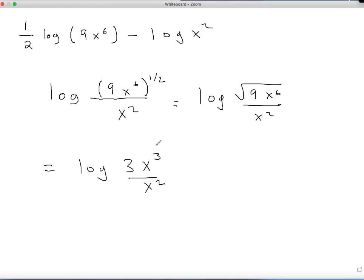3x^3 is up and x^2 is down, so if I cancel out two of them, that should end up landing on 3x, and that would be your most simplified form.